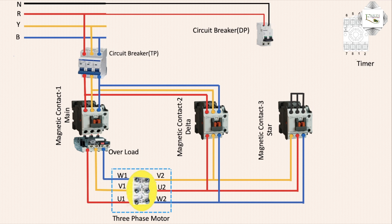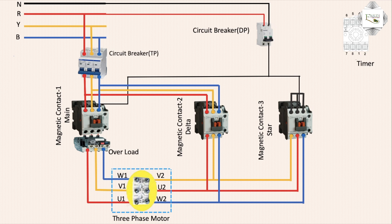Convert one phase — any phase red, yellow, blue — and neutral use for 220 volt. Neutral to magnetic contact: three magnetic contact connection neutral. Second neutral connection to main magnetic contact coil connection A2, first magnetic contact and third magnetic contact A2 neutral connection, first, second, and third magnetic contact neutral connection complete.